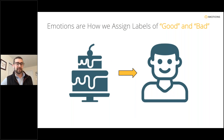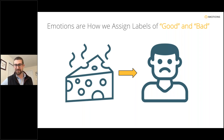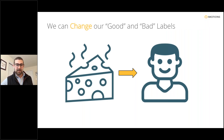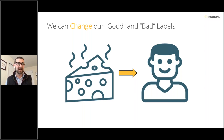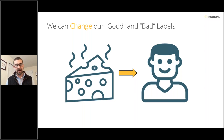Our emotions are the way we assign labels of good and bad to things in our world. We try a piece of cake, it makes us feel good, and we're motivated to have more of it. Conversely, stinky cheese we have an aversive reaction to and we avoid it. But we can also change our labels of good and bad over time — maybe we acquire a taste for that stinky cheese. Emotions are a ubiquitous part of daily life that help guide our behavior in the moment and the future.